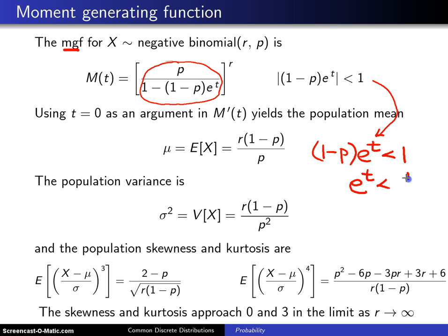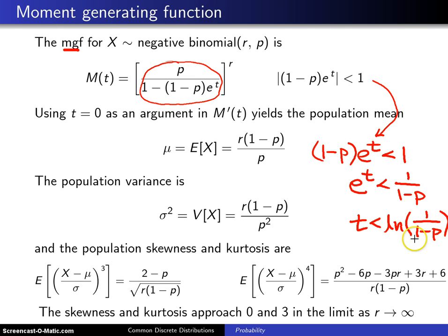Dividing by 1 minus p gives you this expression, and since 1 minus p is always positive, the sense of the inequality stays the same. Taking the natural log of both sides gives you the natural log of 1 over 1 minus p. If p is between 0 and 1, then 1 minus p is also between 0 and 1, so 1 over that quantity is between 1 and infinity, and the natural log of something between 1 and infinity is always positive. This means t must be less than a positive number — the moment generating function exists in a neighborhood about 0 and can be used to generate moments.